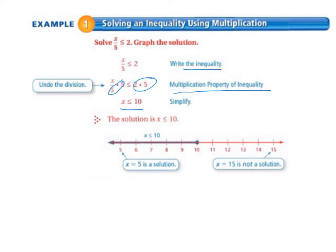So the solution is x less than or equal to 10. So we need to make sure that our graph matches our solution. We color in the circle, so we have a closed circle for our 10 and then everything to the left is darkened on our graph. So when we look at that, 15 is not a solution and 5 is a solution.